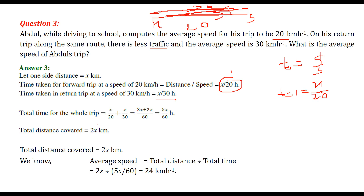Total time equals x by 30 plus x by 20, which gives 5x by 60. Total distance traveled is x plus x equals 2x. Average speed equals total distance divided by total time: 2x divided by 5x by 60. x cancels, giving 60 into 2 by 5, which equals 24 km per hour.